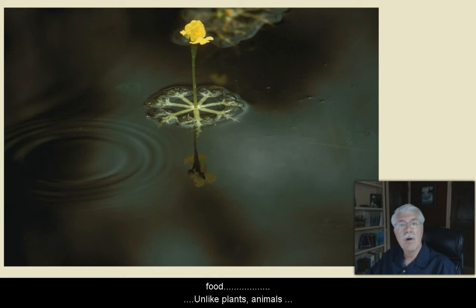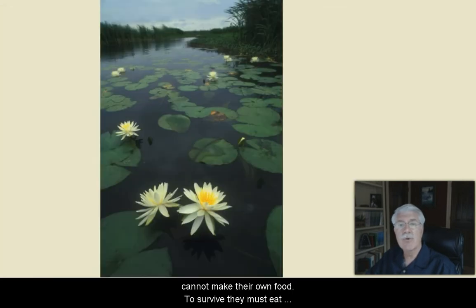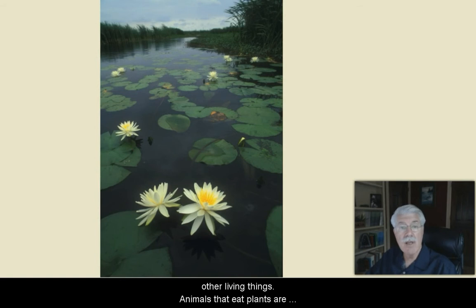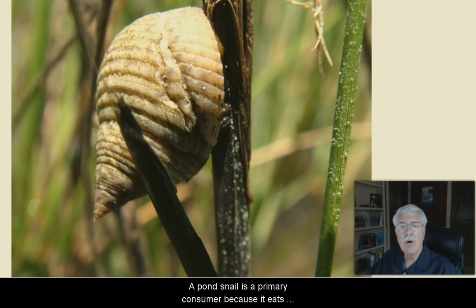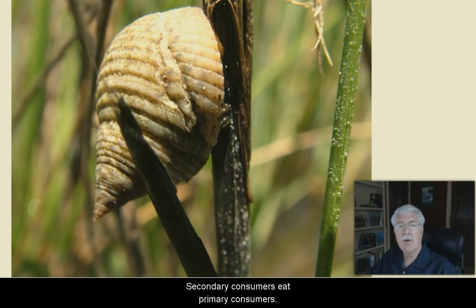Plants and algae are called producers because they produce their own food. Unlike plants, animals can't make their own food. To survive, they must eat other living things. Animals that eat plants are called primary consumers or herbivores. A pond snail is a primary consumer because it eats algae and other aquatic plants.